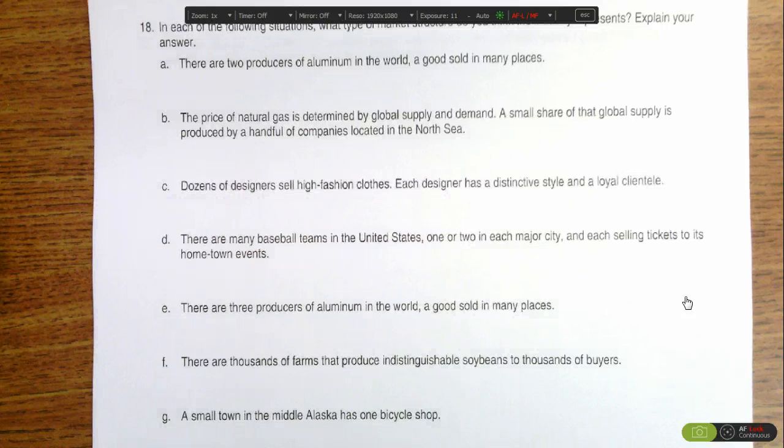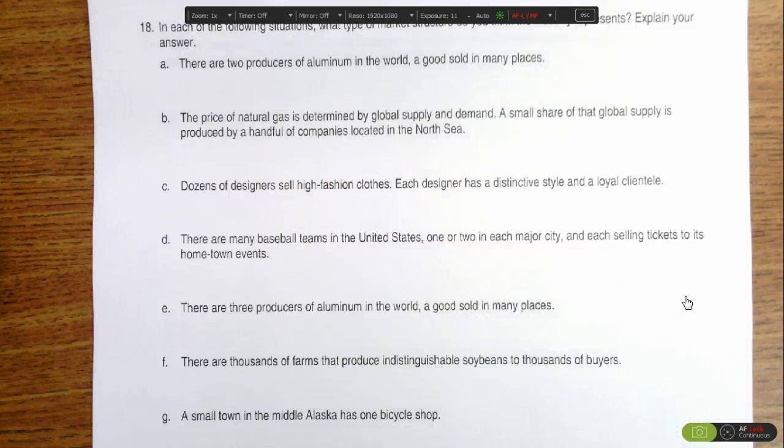Part E says there are three producers of aluminum in the world. While there's only three, that's not many. Each producer has some degree of control over the market, so that would make it oligopoly.